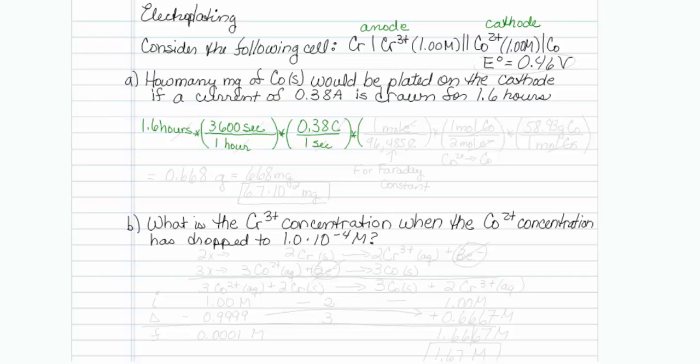Now what I want to do is get to moles of electrons. To do this, I'm going to use the Faraday constant. There are 96,485 coulombs in 1 mole of electrons. So this is known as F, or the Faraday constant.